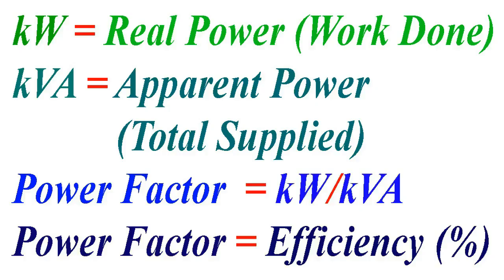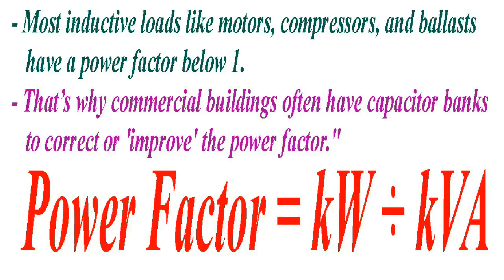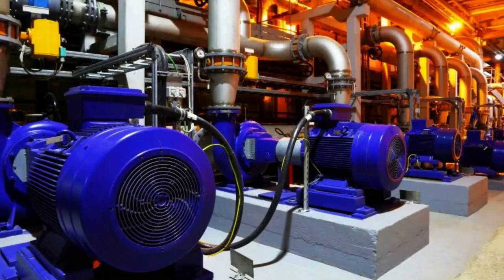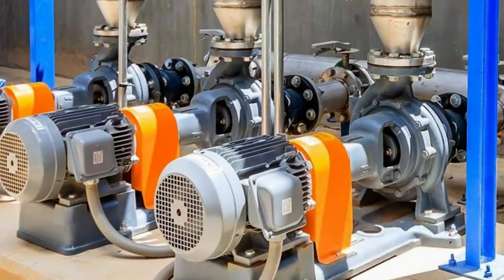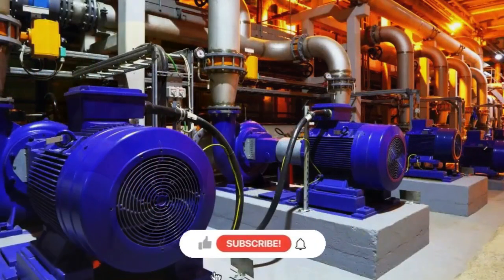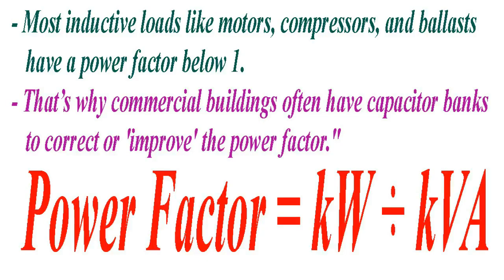The closer we get to one — which we call unity power factor — it means 100% of what's being supplied is actually being consumed, so the power company can charge for 100% of what they are producing. Everything has some capacitors and some inductors in it. In commercial or industrial environments there are tons of motors, motor loads, and ballasted lighting that cause inductive reactance in the circuit, so you actually get a lot of reactive power. It is not truly wasted because it has a useful function.